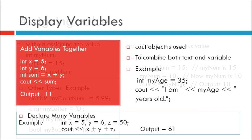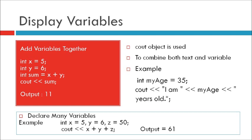Display variables. The cout object is used together with the insertion operator to display variables. To combine both text and a variable, separate them with the insertion operator. For example, integer myAge equals 35, cout insertion operator I am insertion operator myAge insertion operator years old. We have seen here I am and myAge is separated by insertion operator.